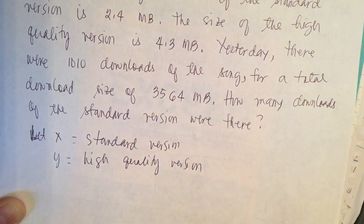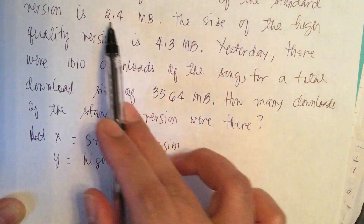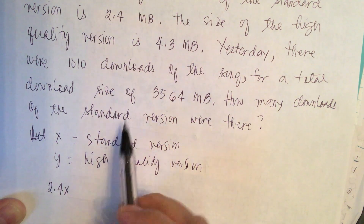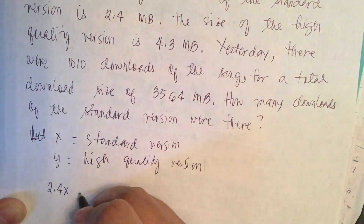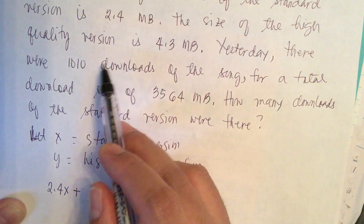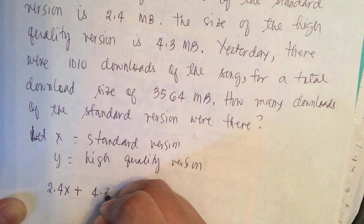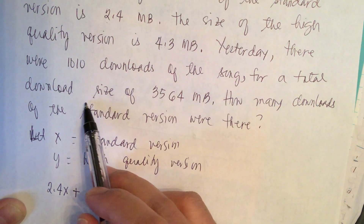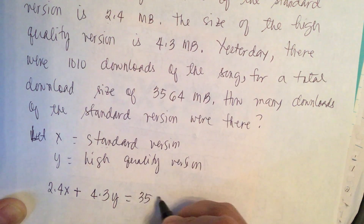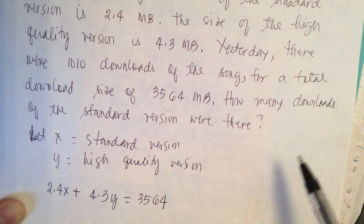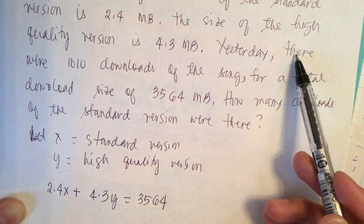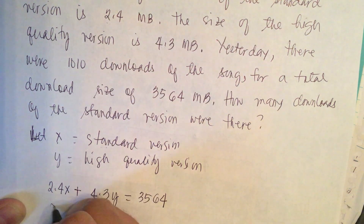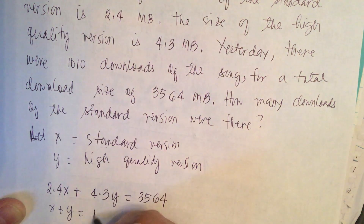Now we create our equations. For the standard version: 2.4x, plus the high quality version: 4.3y, is equal to the total download size of 3564. And since there were 1010 total downloads, x plus y is equal to 1010.